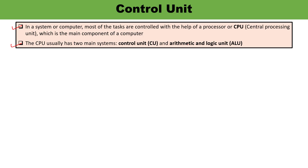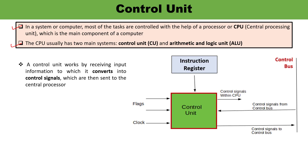The control unit actually coordinates the sequence of data movement into, out of, and between a processor's subsystems and subunits. As you can see in this diagram, there is an input from the instruction register to the control unit, and the output is the control signal. So the control unit works by receiving input information and converts that into control signals, which are then sent to the central processor.